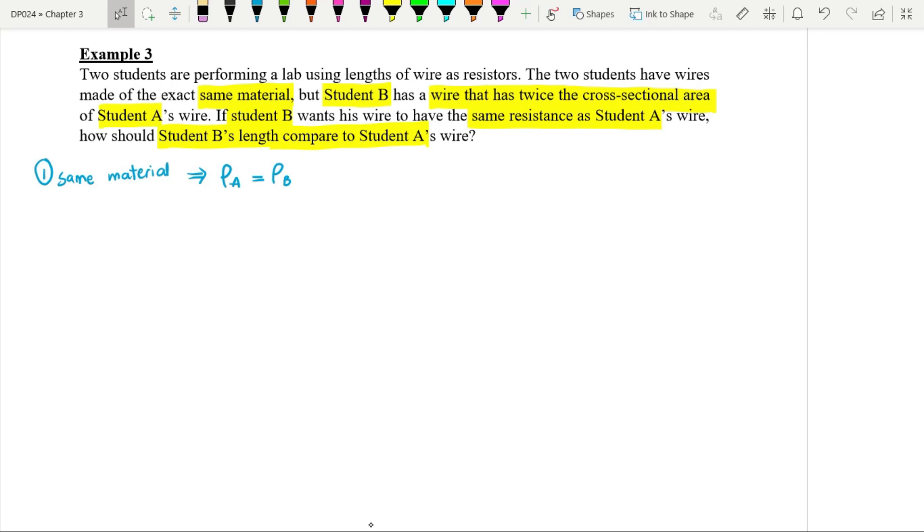And then, next point is they talk about area. So, area of wire for student B is twice of student A. Then point number two about the area, cross-sectional area. So student B's wire, area of student B, area of wire for student B, is twice of area of wire for student A. So that is cross-sectional area.